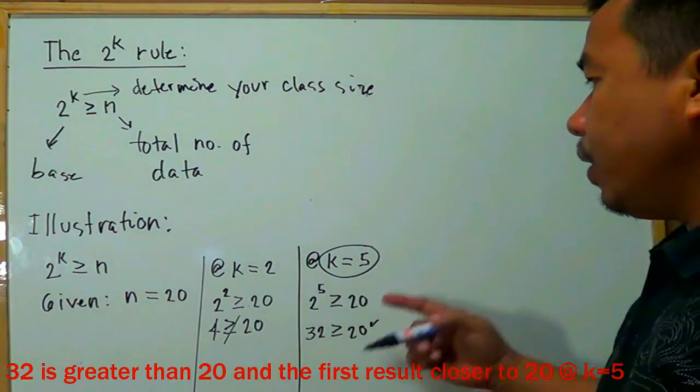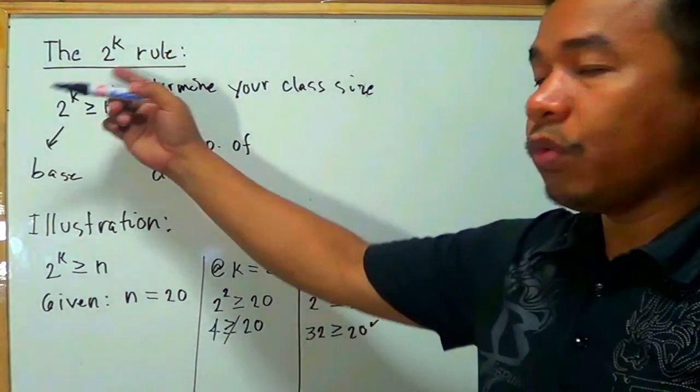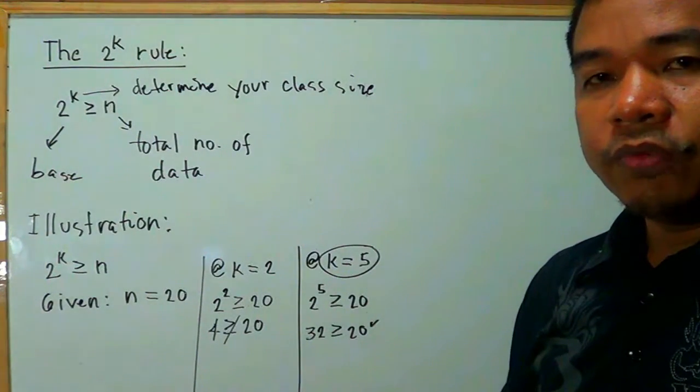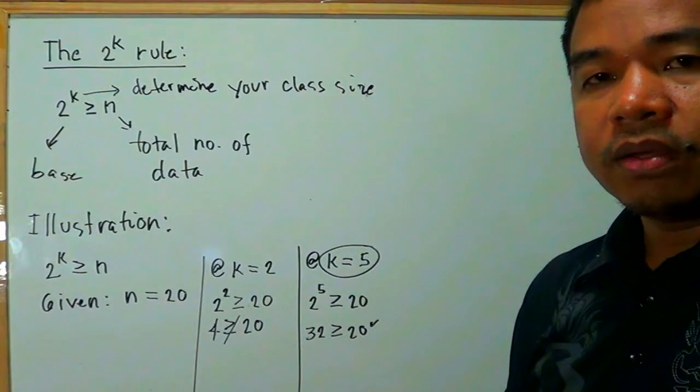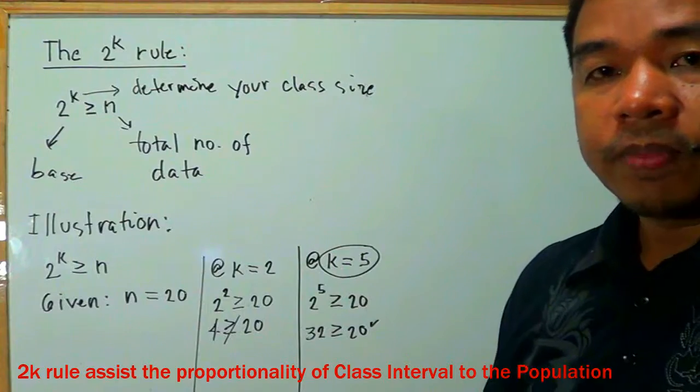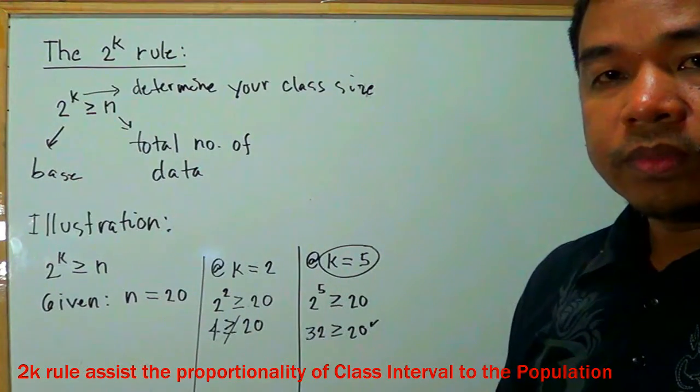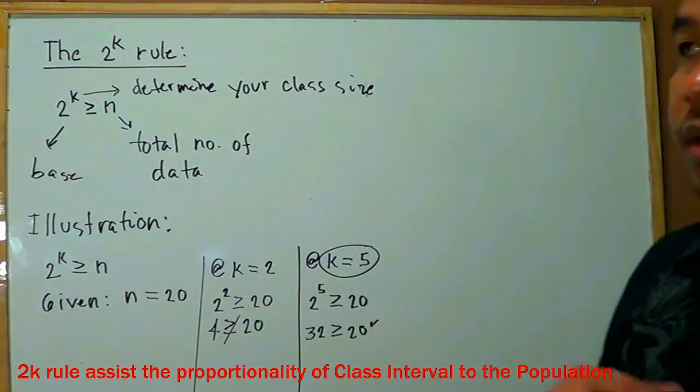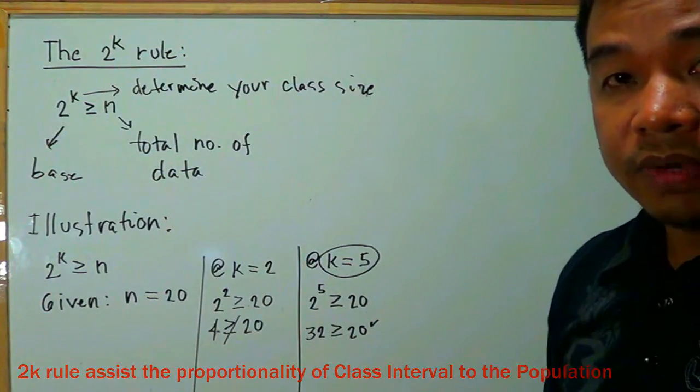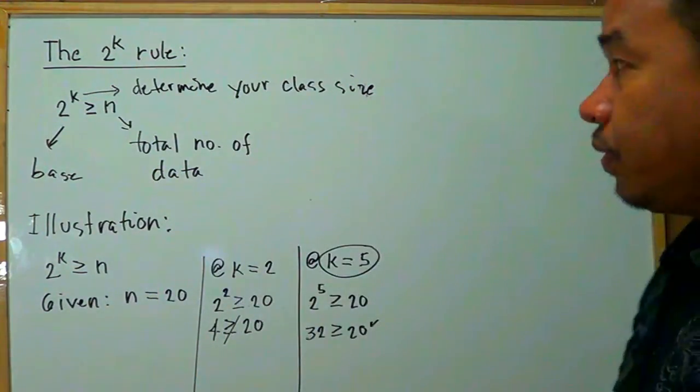Now, the question is, why we need to have that 2k rule? This is for you to, if you cannot really decide for your class size, then I would recommend that use 2k rule. So let's check with finding class interval using this 2k rule.